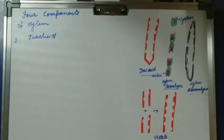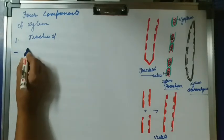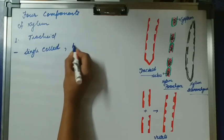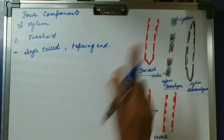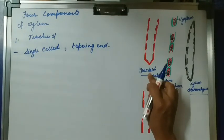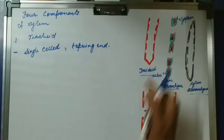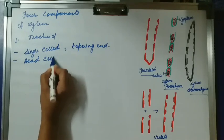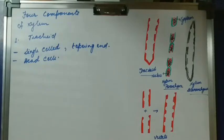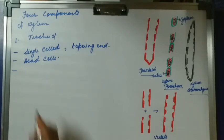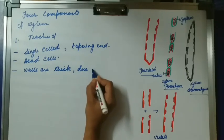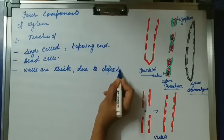The tracheid is a single cell with a tapering end — that means a pointed end. You can see in the diagram they have a tapering, pointed end. They are dead cells. The walls are thick due to deposition of lignin on the walls, which makes the wall thick.